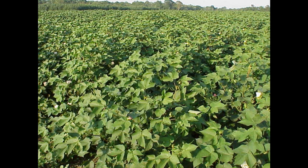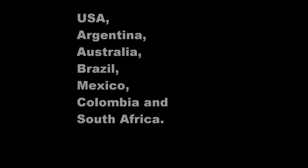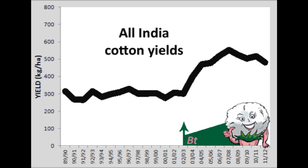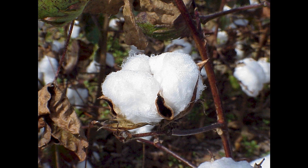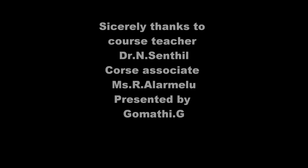Herbicide tolerant cotton was planted in 7 countries. Impact dynamics of Bt cotton in India: Bt cotton has caused a 24% increase in cotton yield per acre and has reduced pesticide usage. The increase in income and benefits for farmers growing Bt cotton during the 15-year period from 1996 to 2010 was $25.4 billion, and $5.2 billion for 2010 alone.